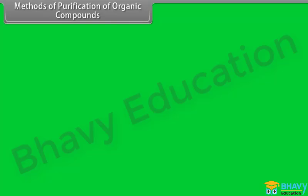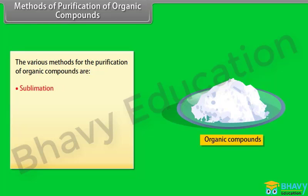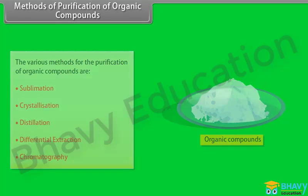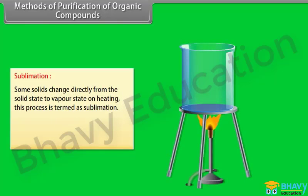Methods of purification of organic compounds. The various methods for the purification of organic compounds are: sublimation, crystallization, distillation, differential extraction, and chromatography.